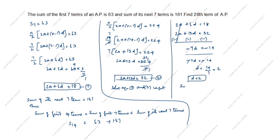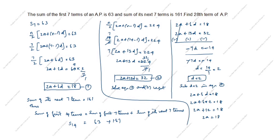Now substitute d = 2 into equation 1: 2a + 6 into 2 equals 18. So 2a + 12 = 18. Therefore 2a = 18 minus 12 = 6, giving a = 3.